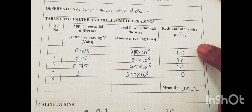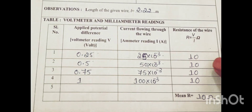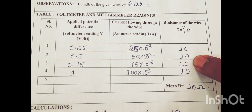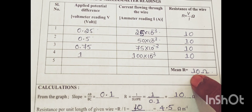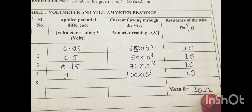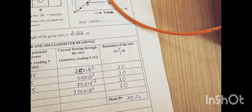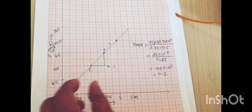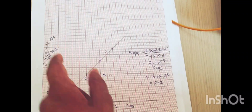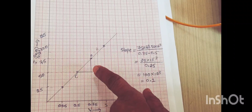Here we have calculated resistance by using the formula V by I, which is almost constant for all four readings. We have to calculate the mean value of resistance, which is 10 ohm. After completing the mean value of resistance, we have to plot the graph. The graph shown here has voltage taken along the x-axis and current taken along the y-axis. You will get a straight line passing through the origin.